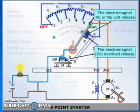The electromagnet HC is also called no-volt release and protects from power failure. This electromagnet is also called overload release coil. This one and that one.